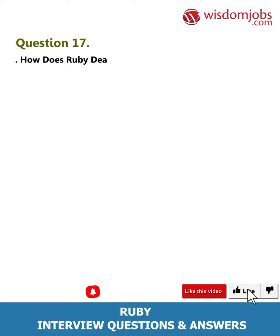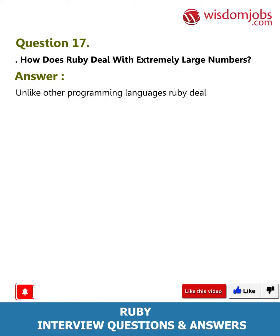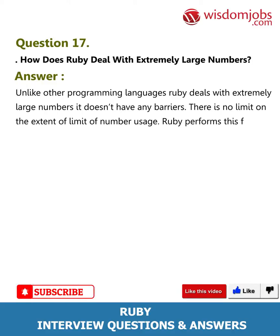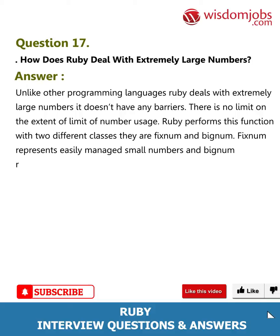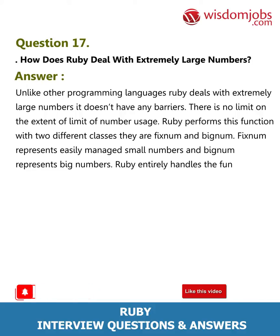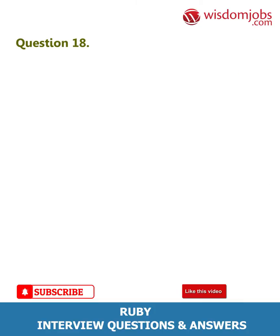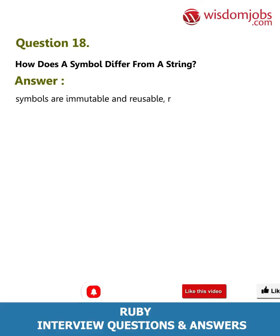Question 17: How does Ruby deal with extremely large numbers? Answer: Unlike other programming languages, Ruby deals with extremely large numbers and doesn't have any barriers — there is no limit on the extent of number usage. Ruby performs this function with two different classes: Fixnum and Bignum. Fixnum represents easily managed small numbers and Bignum represents big numbers. Ruby entirely handles the functioning of these two classes, which leaves a programmer to concentrate on arithmetic operations.